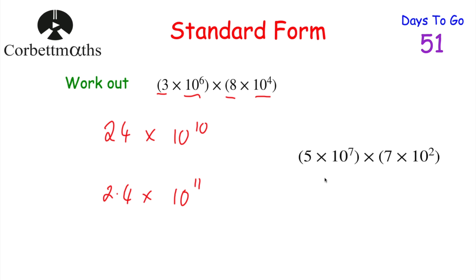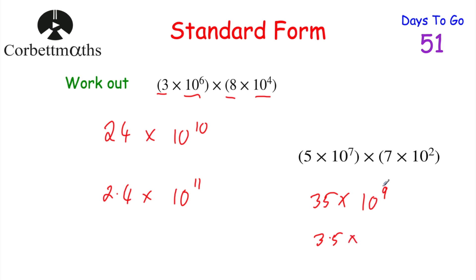Here's one to try: 5 × 10⁷ × 7 × 10². Multiply the fronts: 5 × 7 = 35. Add the powers: 7 + 2 = 9, giving 35 × 10⁹. Since 35 is not between 1 and 10, divide by 10 to get 3.5, and increase the power by 1 to get 10¹⁰. So the answer is 3.5 × 10¹⁰.